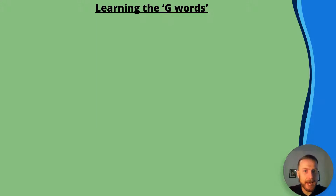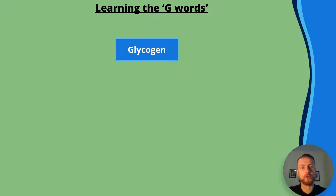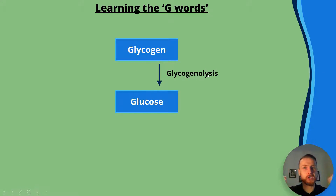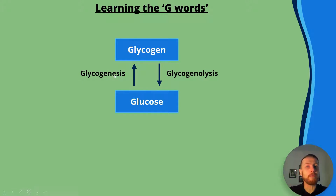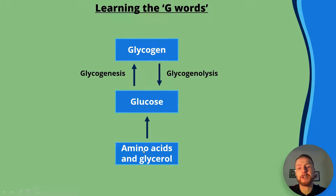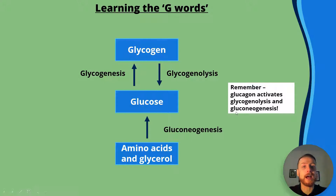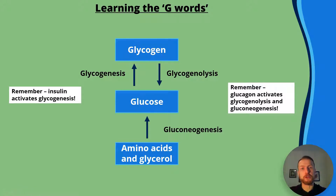Let's learn the G-words because they can be quite confusing. Here's a diagram to help. We start with glycogen, a storage polysaccharide. If glycogen is converted to glucose, we call that glycogenolysis — splitting of glycogen, like hydrolysis. If we go from glucose to glycogen, that's glycogenesis — forming glycogen. Glucose can also be made from amino acids and glycerol — this is called gluconeogenesis, making glucose in a new way. Remember: glucagon activates glycogenolysis and gluconeogenesis, giving us more glucose in the blood; insulin activates glycogenesis, decreasing blood glucose.